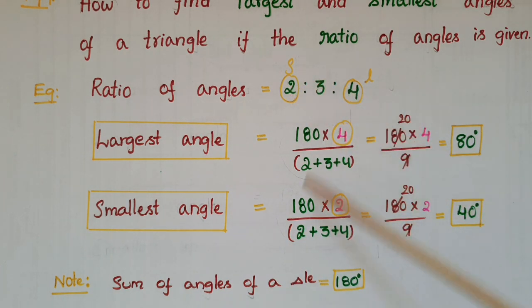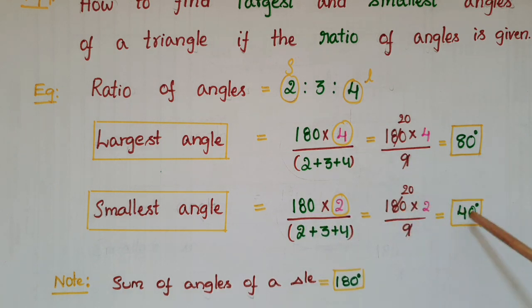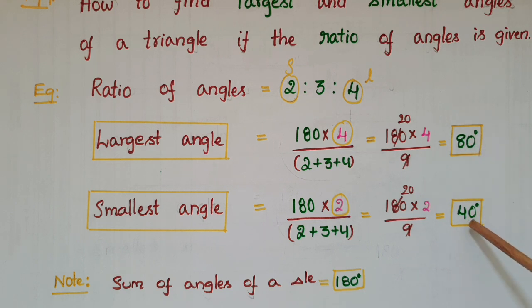The smallest angle is equal to 180 into the smallest number, which is 2, divided by 2 plus 3 plus 4. That is equal to 180 into 2 by 9, which is 40 degrees. So the largest angle is 80 degrees and the smallest angle is 40 degrees.